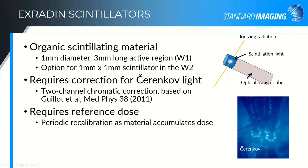The scintillators that we use are organic plastic scintillators. The W1, which is the first generation device, has a one millimeter diameter and three millimeter long active scintillation region. With the W2, there are both one-by-one and one-by-three fibers available.